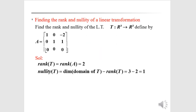Finding rank and nullity: rank(T) = rank(A). Since the matrix has a third row of zeros, rank(A) = 2. Nullity(T) = dimension of domain of T − rank(T) = 3 − 2 = 1.